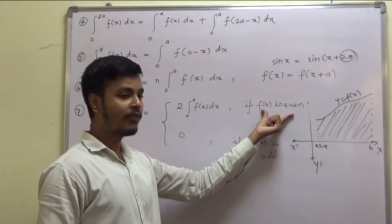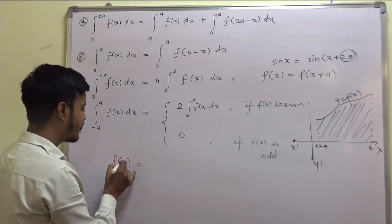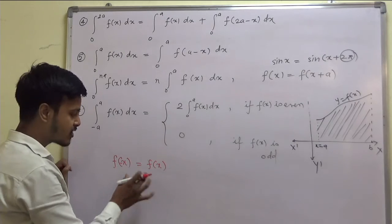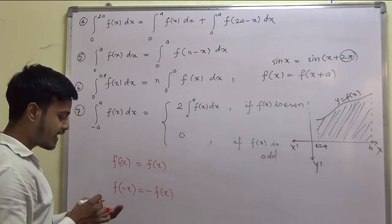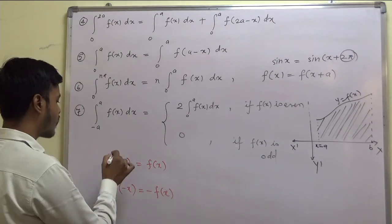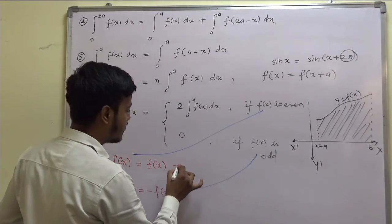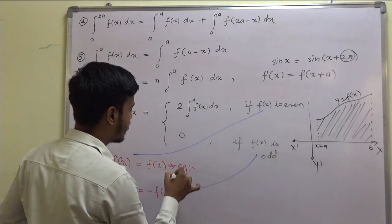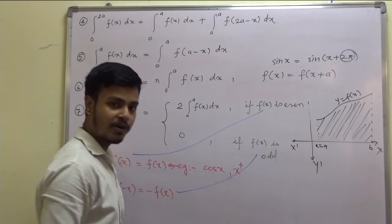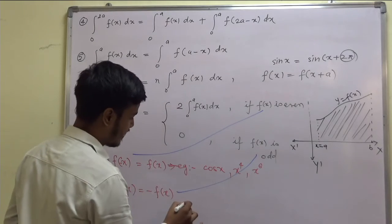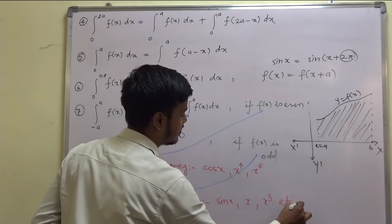Now look at these terminologies: we call a function f(x) even if f(−x) equals f(x). If you replace x by −x and you get minus f(x), then we call it an odd function. Examples of even functions: cos(x), x⁴, x⁶. Examples of odd functions: sin(x), x, x³, etc.